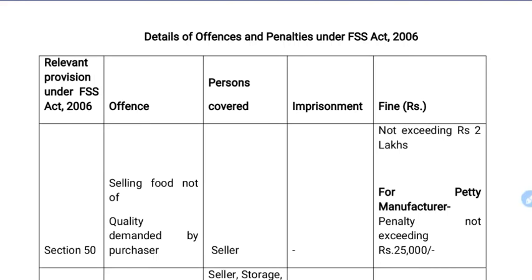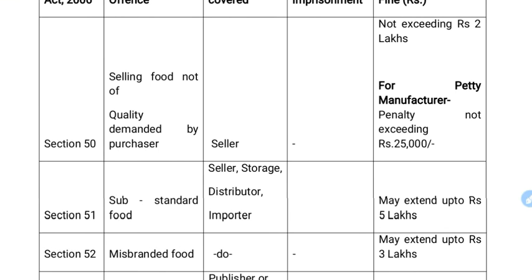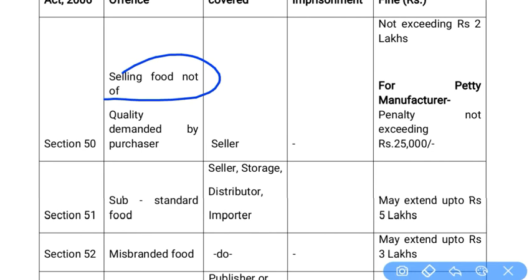In this video we will understand about different kinds of offenses and penalties under the FSS Act 2006. Section 50 says that if you are selling food that is not of the quality demanded by the purchaser, compared to the seller's standards, the penalty is ₹25,000.